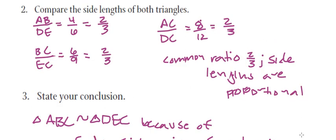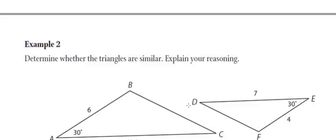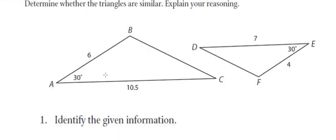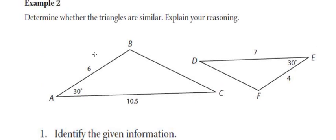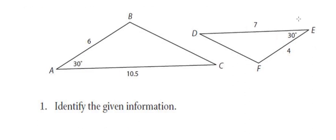This was one where we stated the triangles are similar because we identified the corresponding side lengths and proved they had a common ratio. For the next example, we're using side-angle-side similarity. SAS similarity requires two proportional sides and a congruent included angle. I already know this is an included angle because I know the lengths of each side, and it is congruent to the other included angle where two side lengths are given.